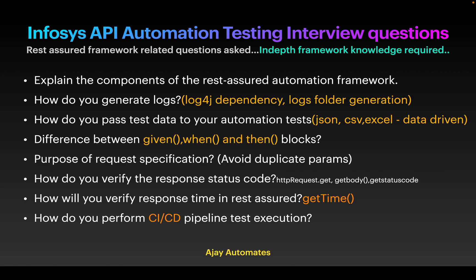The first question was to explain the components of your REST Assured framework — what design pattern you are using, what packages you have, how you do test reporting, and how you generate logs using log4j. You have to explain how you are configuring dependencies and how logs are generated. The next question was how do you pass test data to your automation tests — you might use Excel, CSV, or JSON to pass test data.